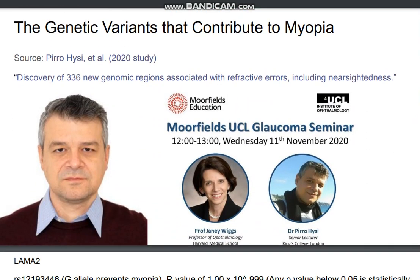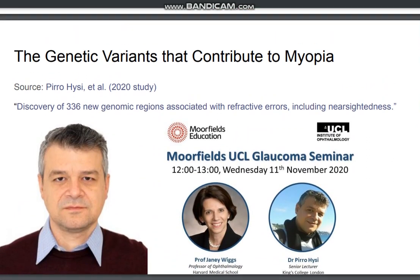Now let's get into the topic of the video: the genetic variants that contribute to myopia. The source is from a 2020 study — a very large study of over 550,000 people — in which researchers discovered 336 new genetic regions associated with refractive errors, including nearsightedness.